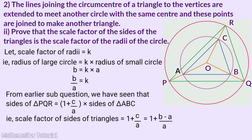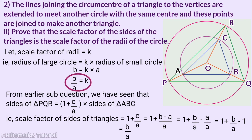1 plus B by A equals A by A plus B by A, minus A by A. A by A equals 1, so this becomes 1 plus B by A minus 1. Since 1 minus 1 is 0, this becomes B by A. So the scale factor K equals B by A, which is the ratio of the radii of the circles.